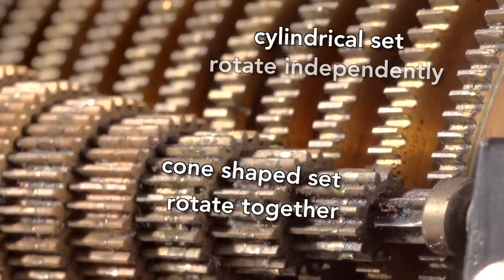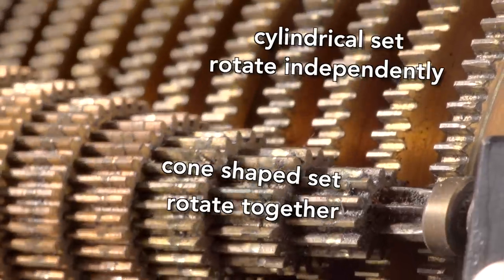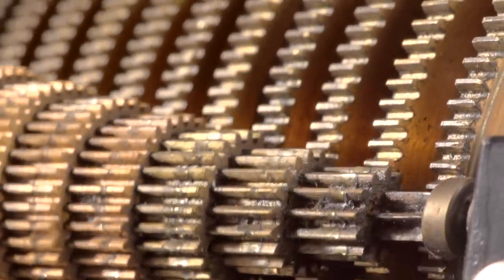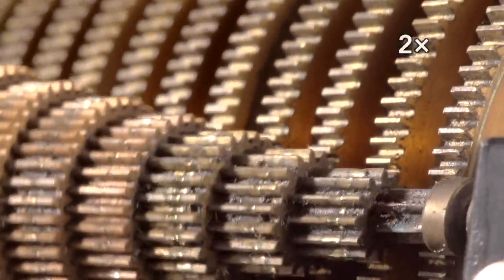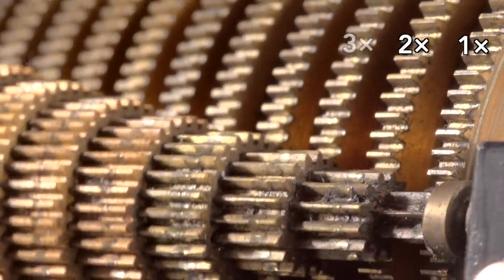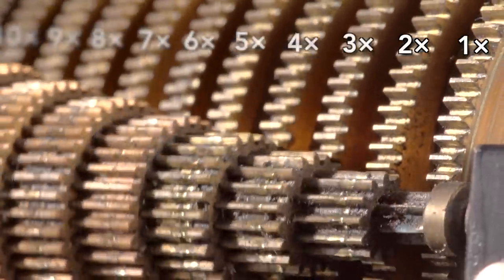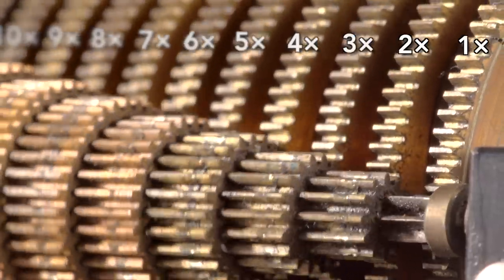The gears on the cylindrical set can rotate independently, each at a rate determined by the corresponding gear on the cone. This gear rotates twice as fast as this gear, this one three times as fast, and so on. These gears generate the different frequencies.